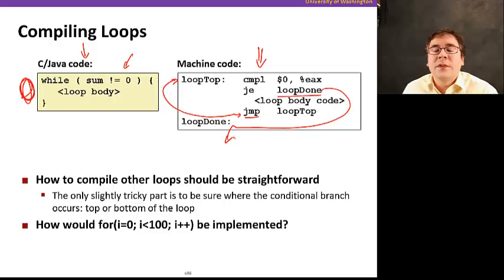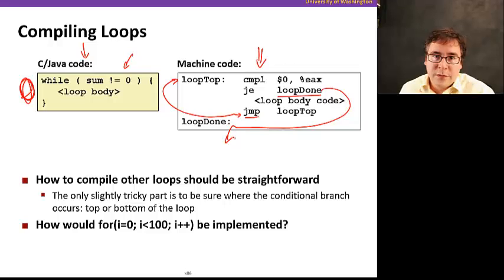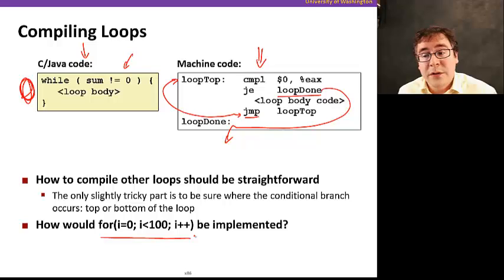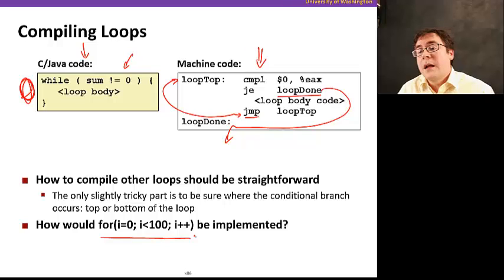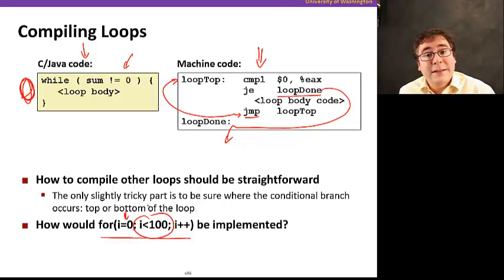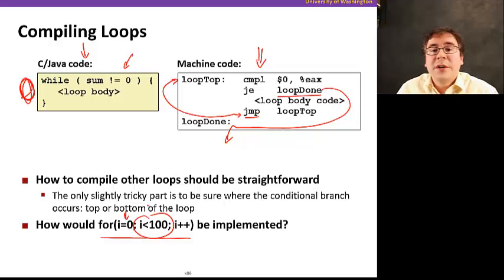The only trick is where you put the conditional branch — either at the top of the loop or at the bottom of the loop. For example, if you were to implement a for loop where i equals zero and loops until i is greater than or equal to 100, keeping incrementing i: before the loop starts, we set i to zero, we have a condition that checks while i is less than 100, and in the body of the loop we keep incrementing i. Then we jump out when the condition is no longer satisfied.